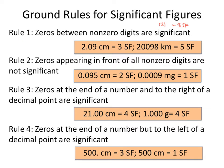Rule number one: zeros that are between non-zero digits are significant. Basically, anytime you have a zero that shows up between two digits that are not zeros, the zero in between is going to be counted as significant. So in a number like 102, there are three sig figs. And if two zeros are sandwiched in between non-zero digits, we have five significant figures in that number.